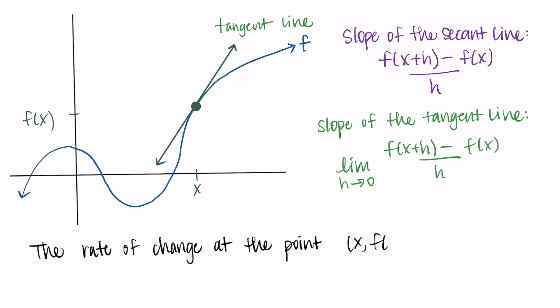So we are able to say that the rate of change at the point x, f of x is found by looking at the slope of the tangent line at that point. So every point will have its own tangent line that represents the slope at that point, and the rate of change is the slope of that line. All right, so I just want to highlight one more thing.